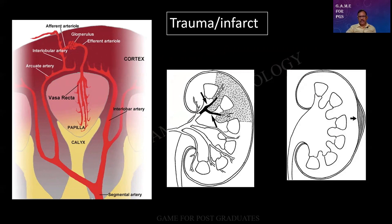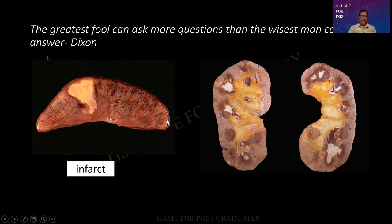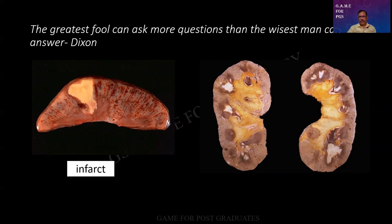This is a classical wedge-shaped infarct. Whenever there is an obstruction, it is just like the delta of a river — branching and re-branching — and all these areas are affected, resulting in a triangular infarct. Initially it is congested, and later when there is phagocytosis of the RBCs, it becomes pale in color. This is a special type of renal necrosis: the renal pyramid — part of it is necrosed whereas the remaining is viable. Generally one-third can be necrosed, remaining two-thirds viable, or vice versa. This happens in necrotizing papillitis in a case of diabetic kidney. What are all the different types of necrosis — you should be able to mention them.